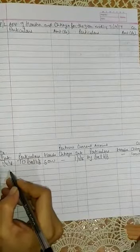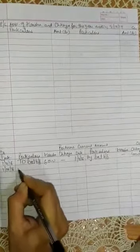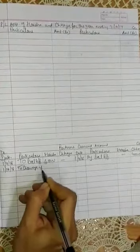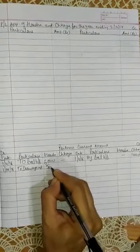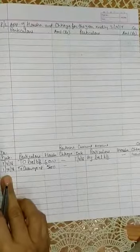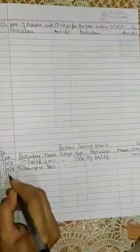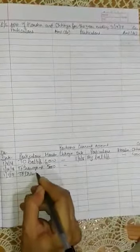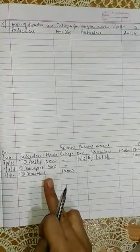Now let's write the drawings balance from the trial balance. On 1-10-16, Harsha's drawings are 5,000, and on 1-1-17, Chaya's drawings are 10,000 — as given in the trial balance. I have copied these dates and amounts directly from the textbook trial balance. First I copied the current account balances, then the drawings balance.